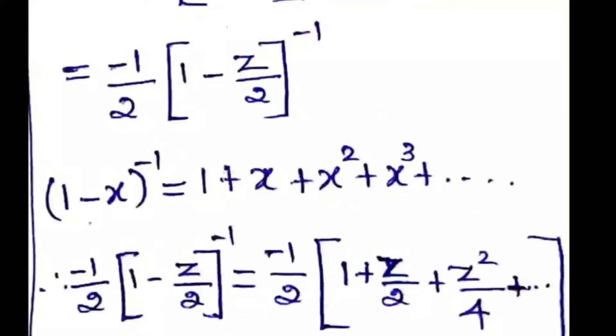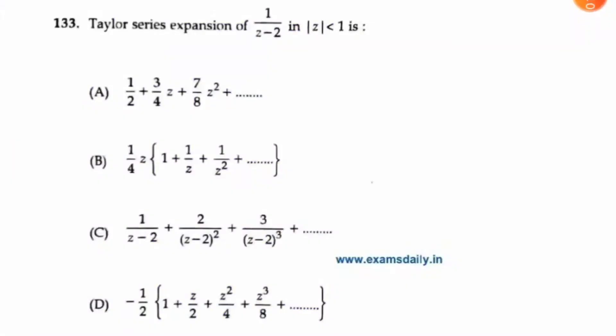We are taking z/2 as x and we are going to expand it. We can keep that -1/2 outside itself, and we are going to expand this: 1 + z/2 + z^2/4, and it goes on. So here option D is the right answer. Thank you and keep watching for the continuation of this question paper discussion.